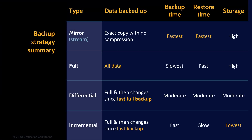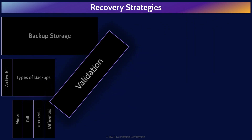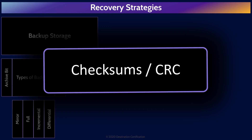Here's a summary of the different backup strategies. It is important to validate that backups are occurring correctly. This can be done in numerous ways, including cyclical redundancy checks (CRC checks), checksums, bit-for-bit comparisons of the backups to the original data, or just spot checking select files. These verification checks can be done while the backup is being performed and also periodically on shelved tapes.